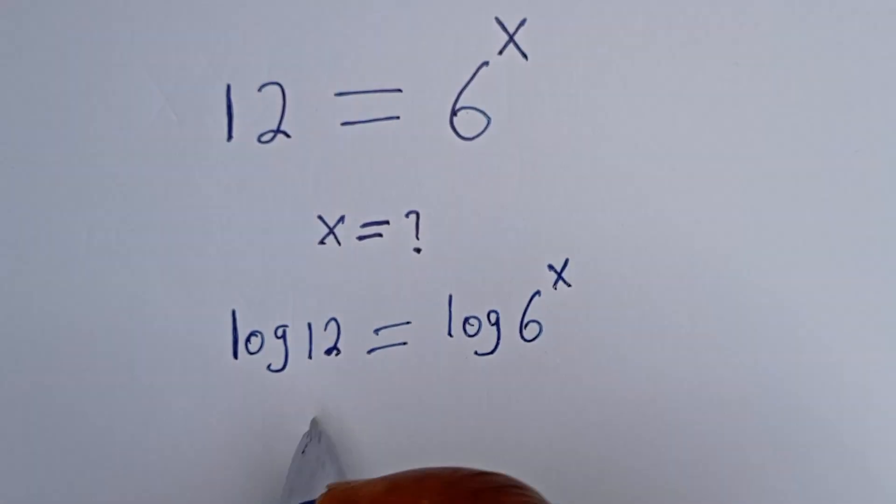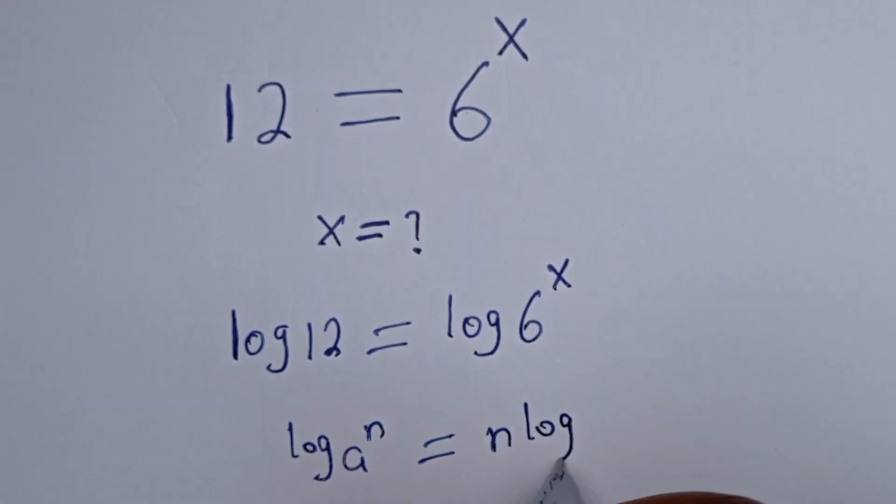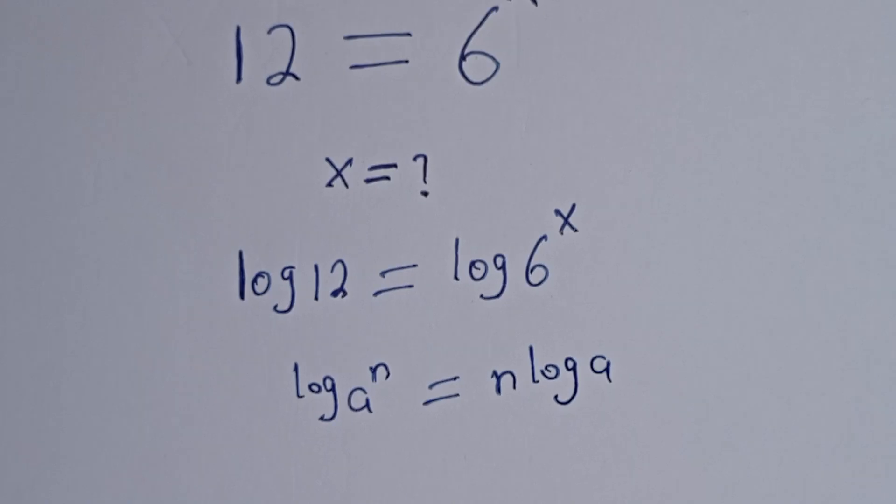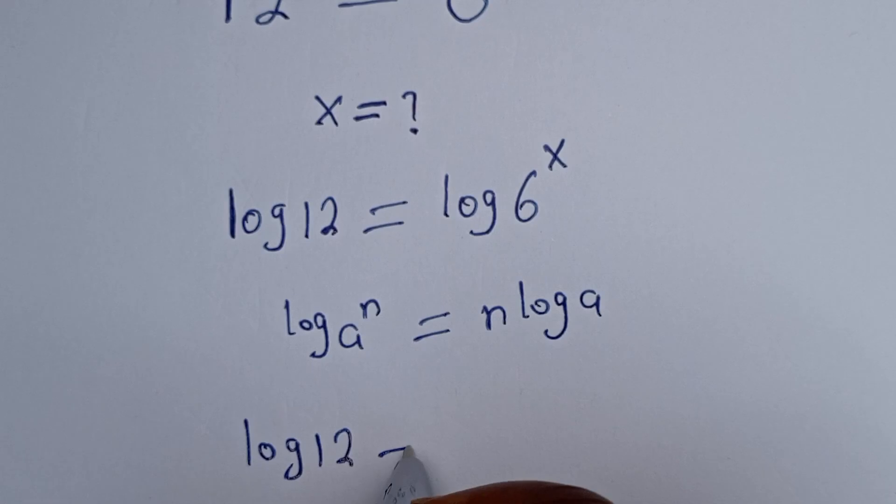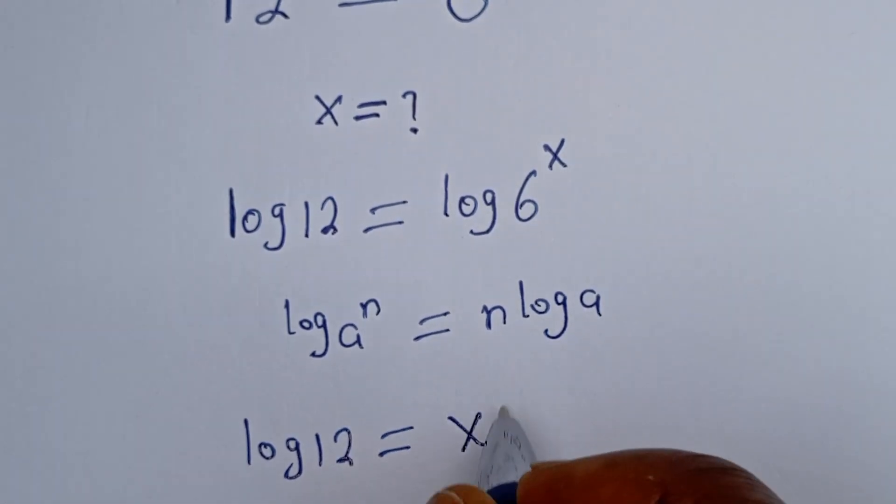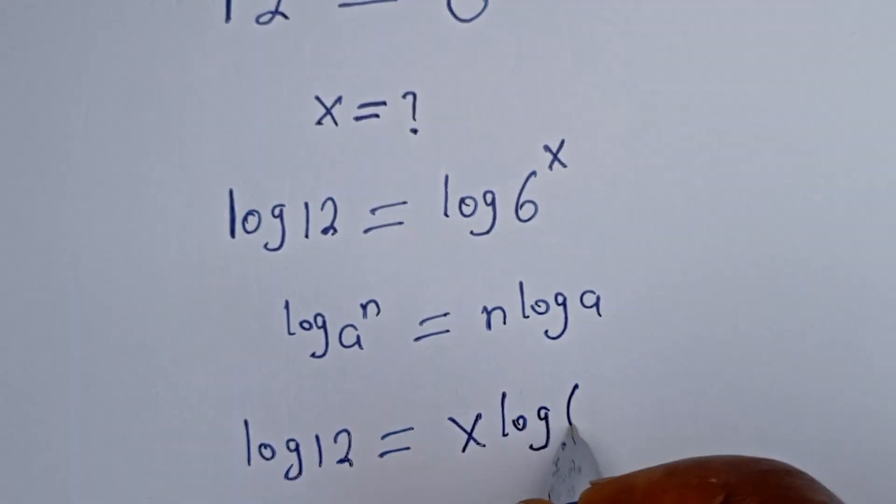Now if you have log a to the power of n, this is equal to n log a. So this becomes log 12 is equal to x log 6.